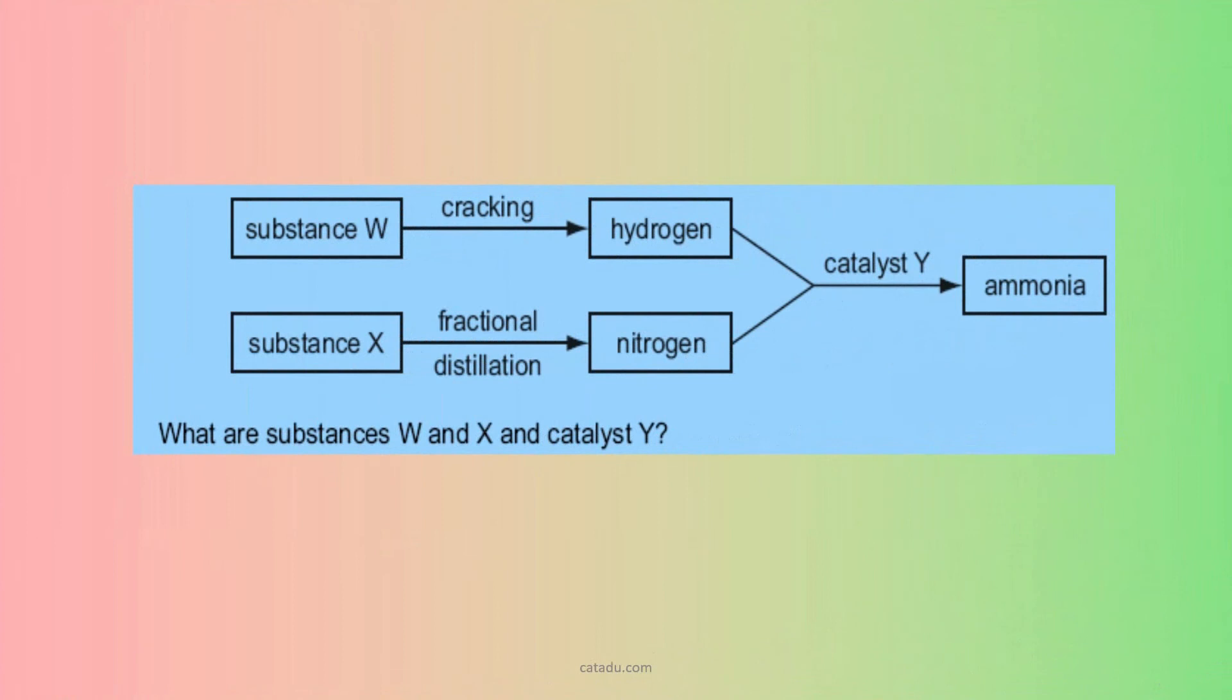The next exercise for you, we can make ammonia from W and X. W is here actually a petroleum substance we use to crack hydrogen. Nitrogen is another ingredient we need, another element.